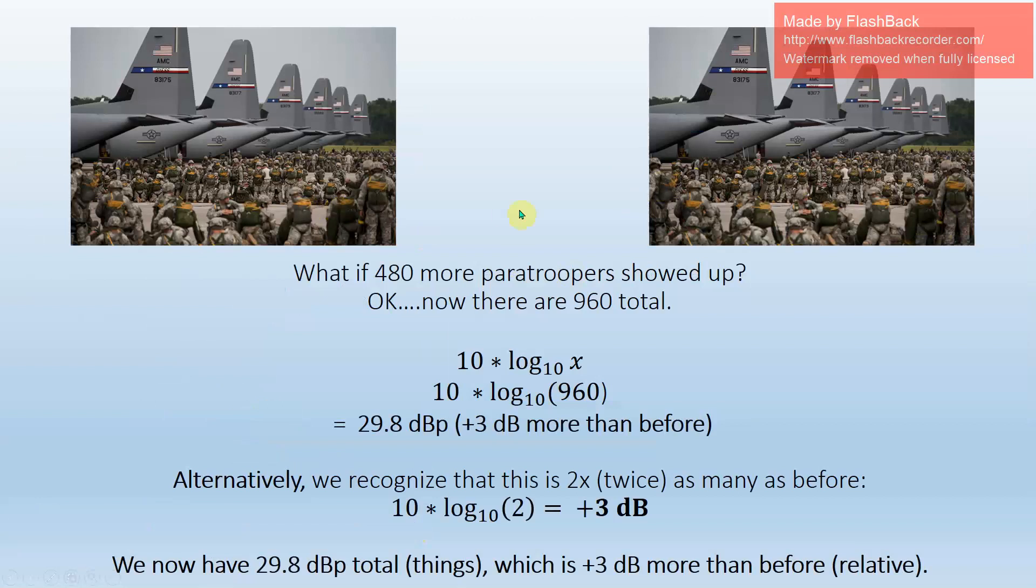So let's take that example forward. And suppose now twice as many paratroopers showed up. We went from 480 and now we've got 960. So let's convert that to decibel paratroopers. Same equation, 10 times log 10 of 960. Calculator spits out 29.8 dBP. And you'll know that this is 3 dB more than before. Wait a minute, dB is a relative expression. So we could have taken the other way and said, hey, you just doubled the amount of paratroopers on the ramp, right? And I recognize this is twice as many as we had before. So I take the same equation, 10 times log 10 of 2 is plus 3 dB.